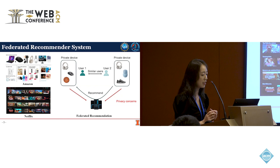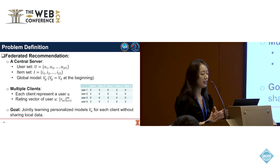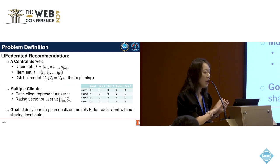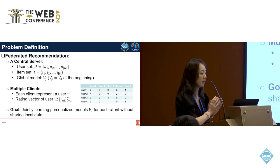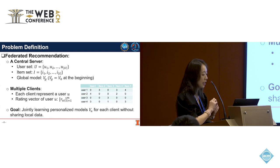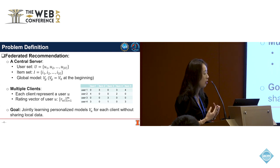Instead of directly sending user interaction data to a central server, federated recommender systems process the data locally on users' devices, and only the essential model updates are sent back to the central server for centralized model learning. The architecture includes a central server and multiple clients, each representing an individual user such as personal laptops and mobile phones. Each user maintains a rating vector locally which captures their preferences across items, and this should not be shared as it is private data.